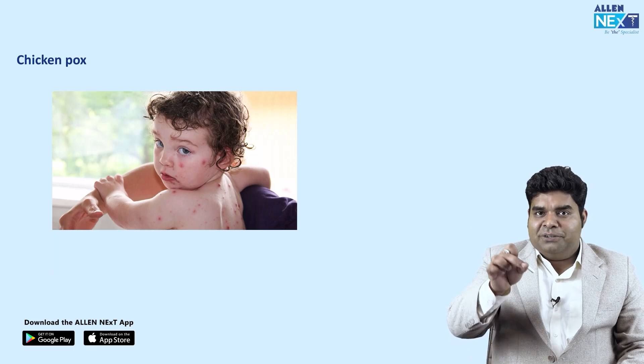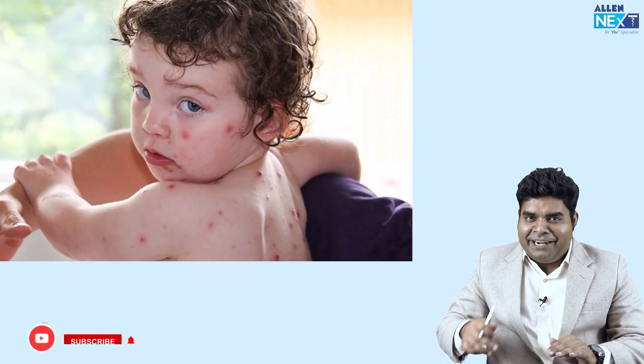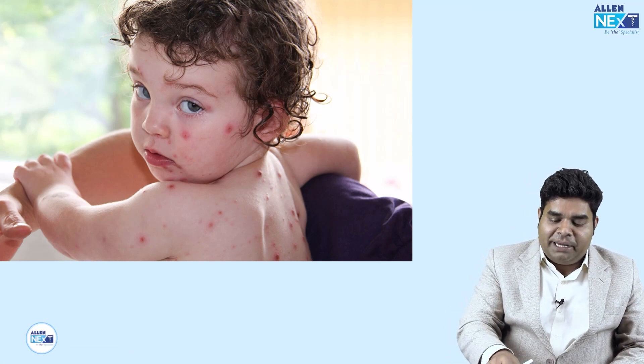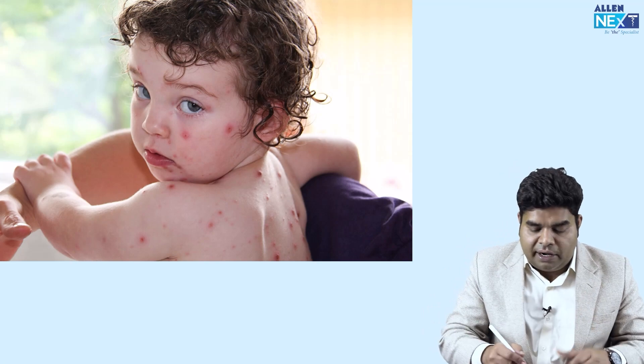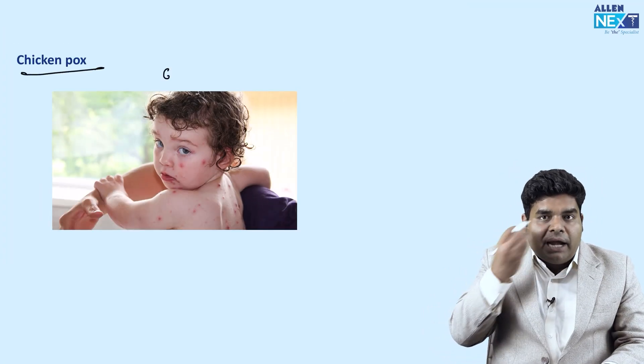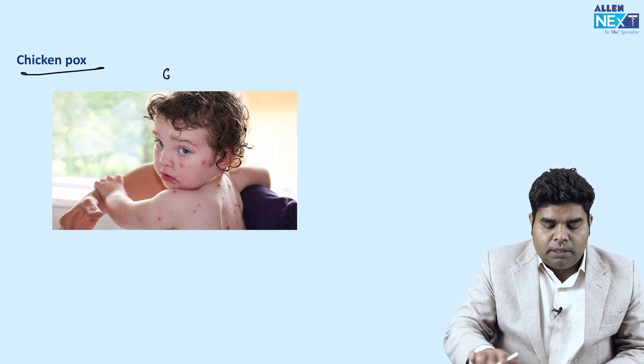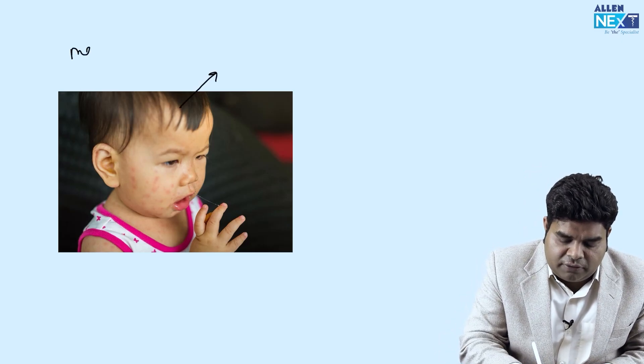Now let us look at the next image. Can you identify the disease? This child is also having rashes on the face, but the rashes are not coming out from the skin surface like chickenpox. Here is a good image of chickenpox rashes for comparison — you can see rose petal and dew drops, with rashes coming out significantly, mostly on the trunk. In the new image, the rashes are not protruding like chickenpox, so these are rashes of measles.